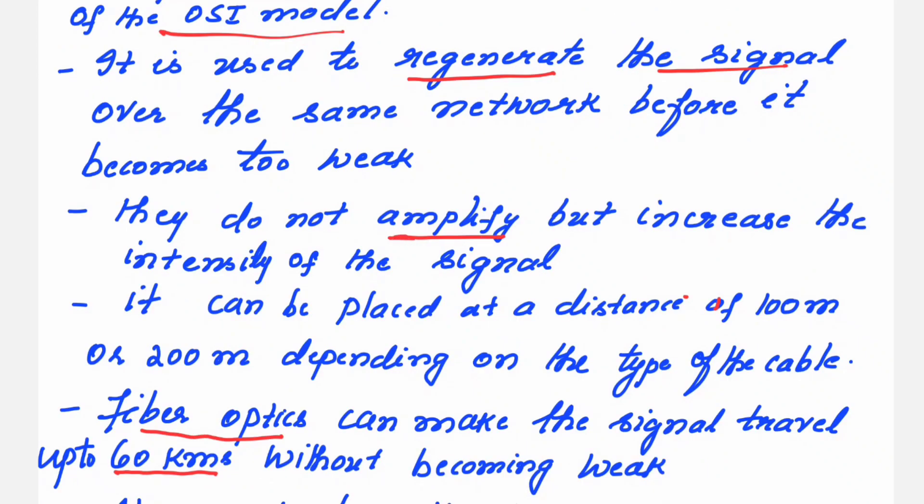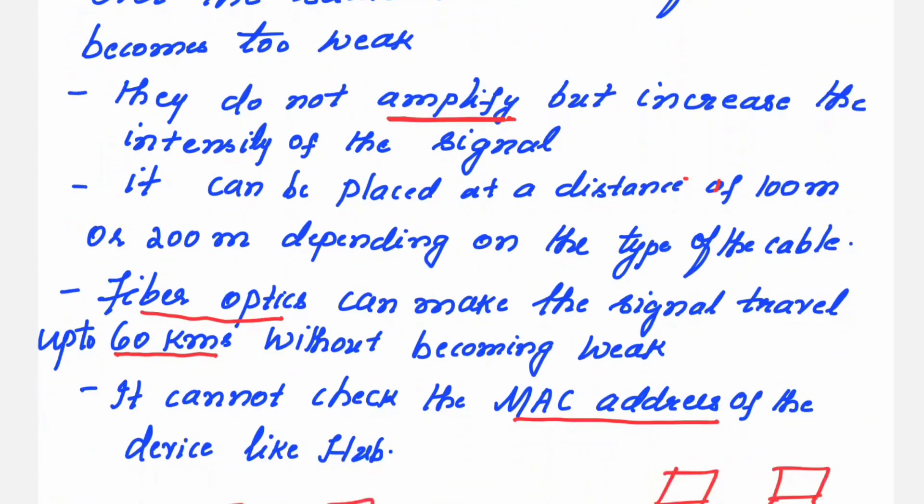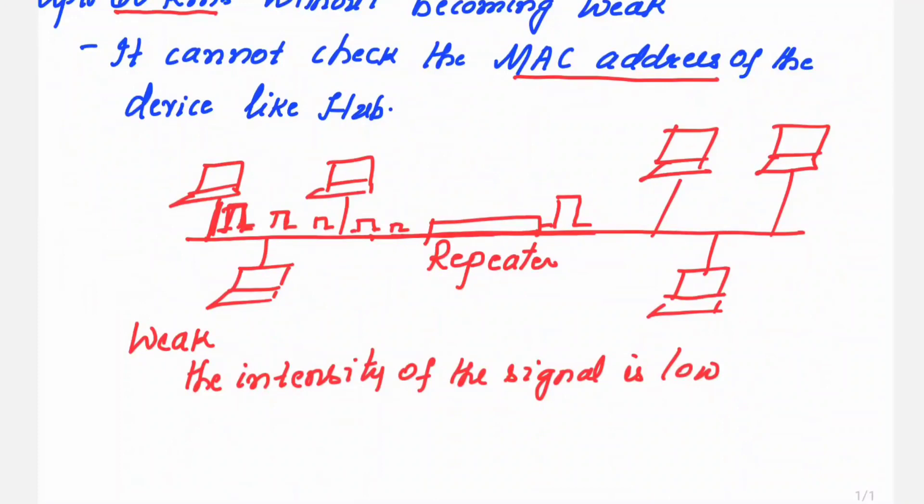These repeaters do not amplify, but increase the strength of the signal. Amplification is a process of increasing the magnitude of the signal. If the signal is x, then the amplifier can make it 2x, 4x. But for the repeater, if the original signal is x, the restored signal is also x. This is the main difference between the amplifier and the repeater.